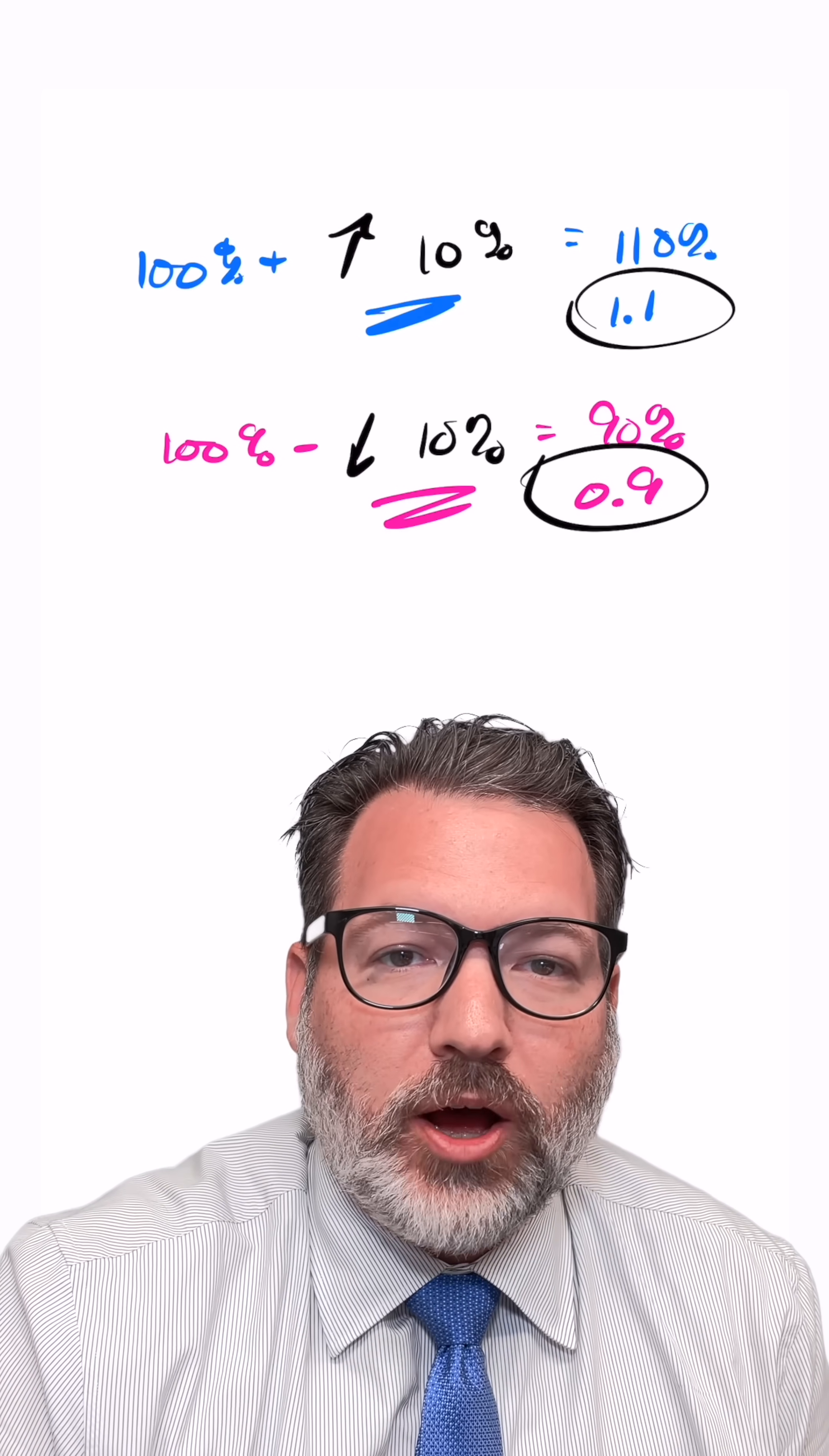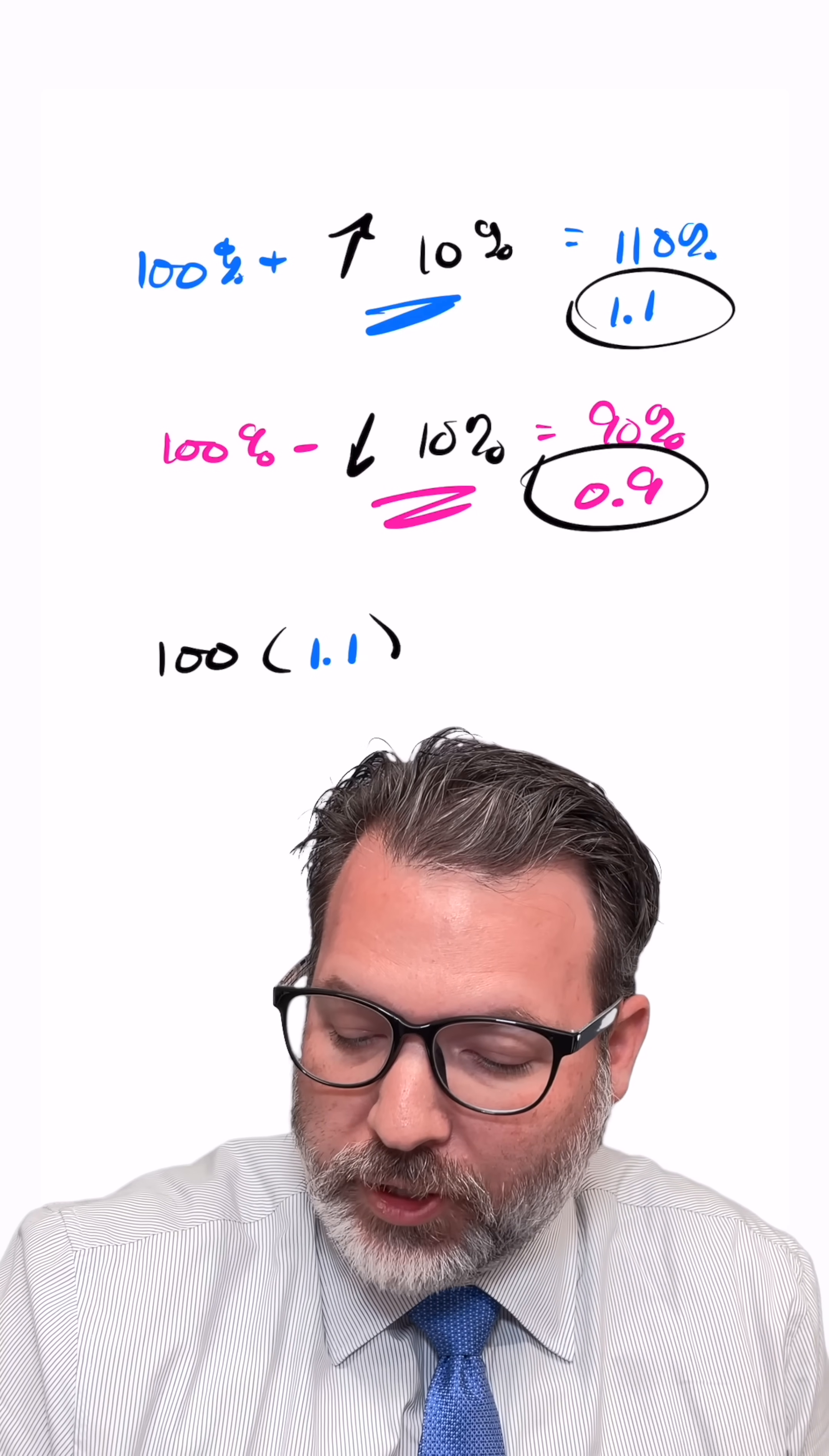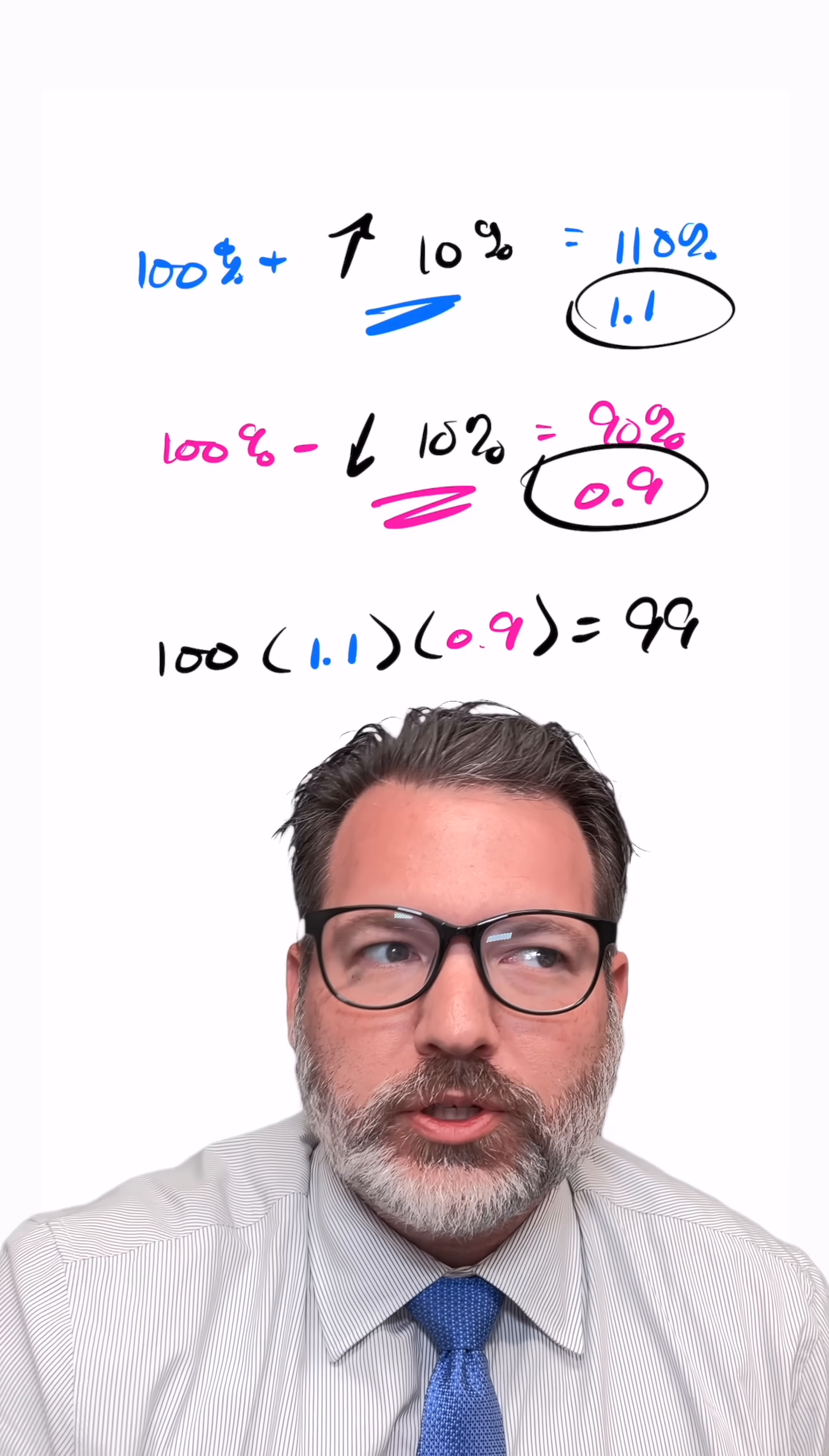It's tempting to look at this and think that's basically offsetting, but remember we're multiplying. If you start out at 100% of something and then multiply by 1.1 for when you go up 10%, and then multiply again by 0.9 when you go down 10%, what you actually find is you do not end up where you started. You end up at 99% of where you started.